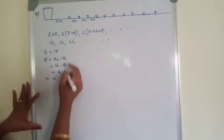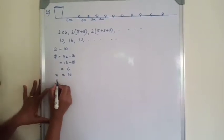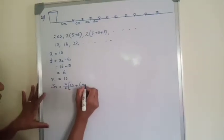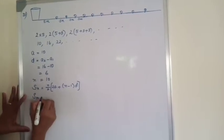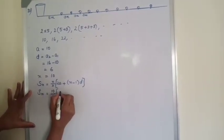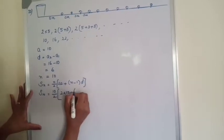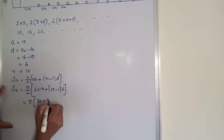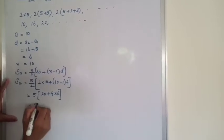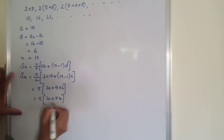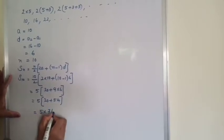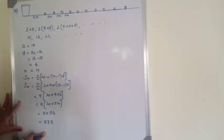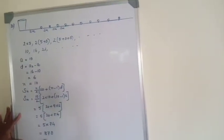We want to find how much distance the competitor has to run, so we find Sₙ. Sₙ = N/2 × (2A + (N−1) × D). S₁₀ = 10/2 × (2×10 + (10−1)×6) = 5 × (20 + 54) = 5 × 74 = 370. So the total distance run by the competitor is 370 meters.